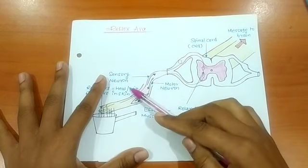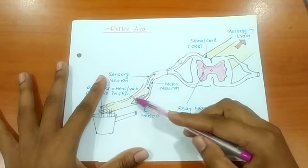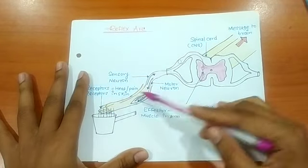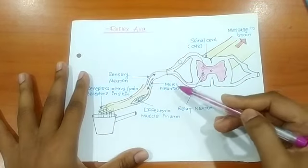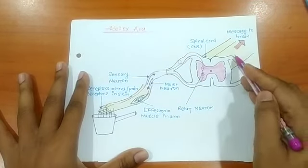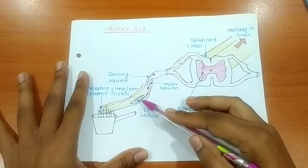Sensory neurons are the neurons which transport messages from the skin or body towards the brain, and motor neurons are the neurons which transport messages from the brain towards the muscles or skin.